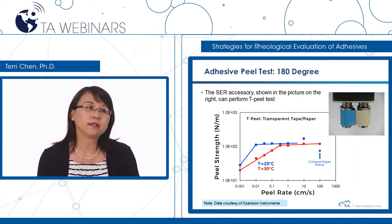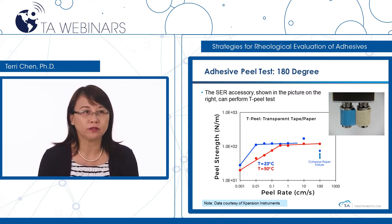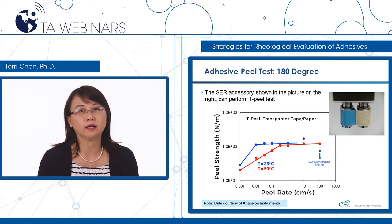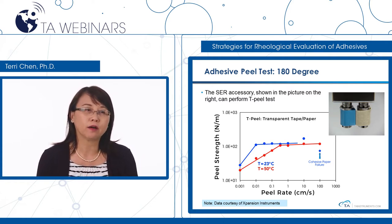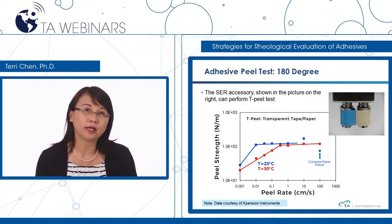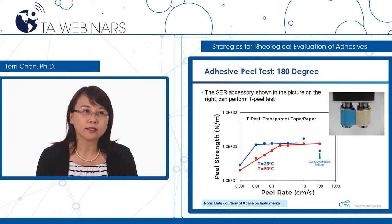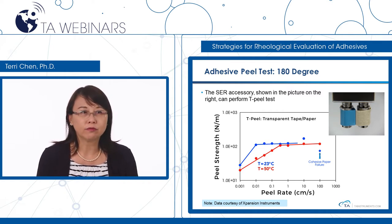Peel tests are usually conducted at different peel angles such as 90 degrees or 180 degrees. Using a SER geometry on a rotational rheometer, we can easily perform the peel test at 180 degrees. The peel strength can be measured at different peel rates and also at different temperatures.